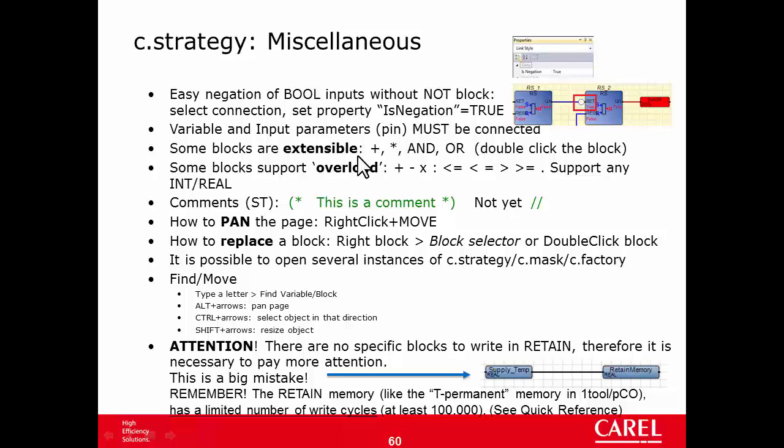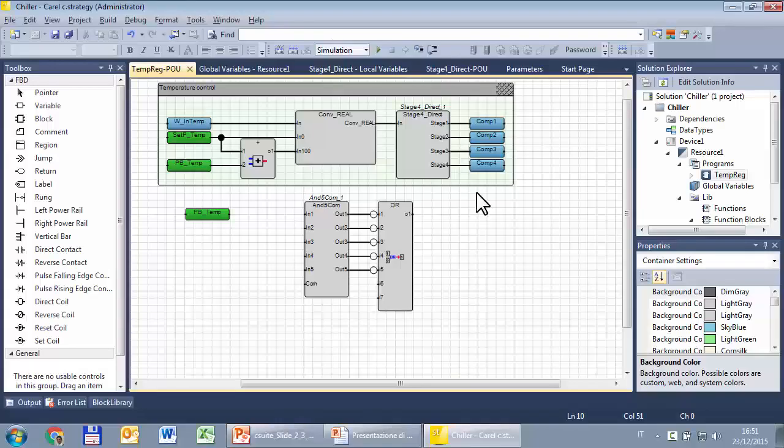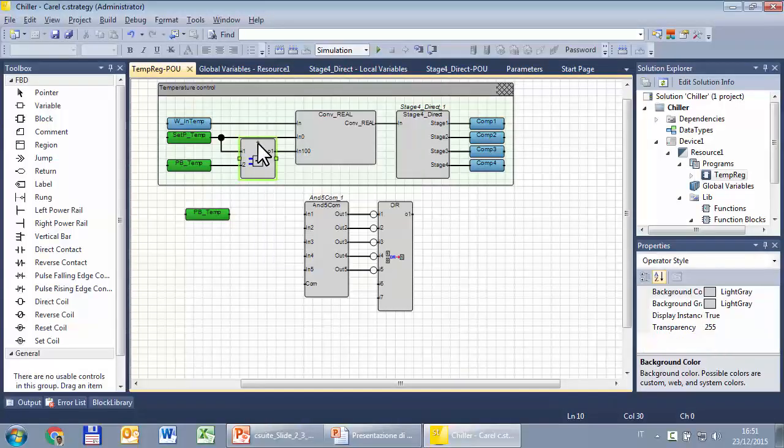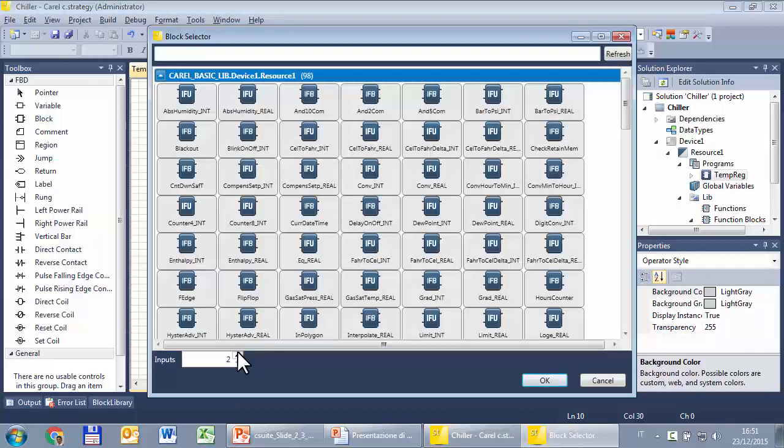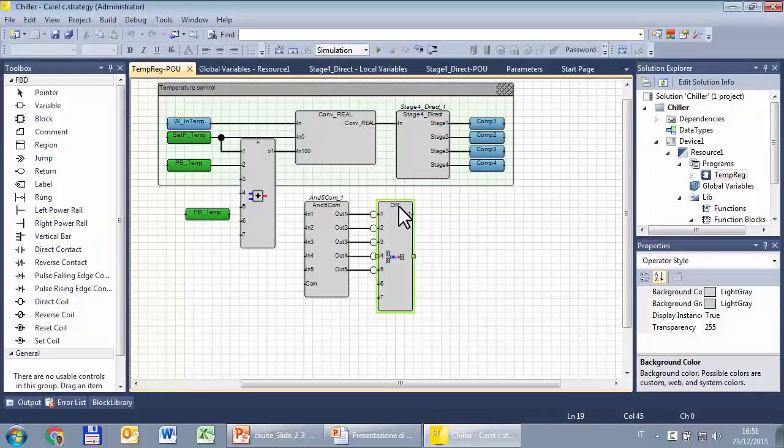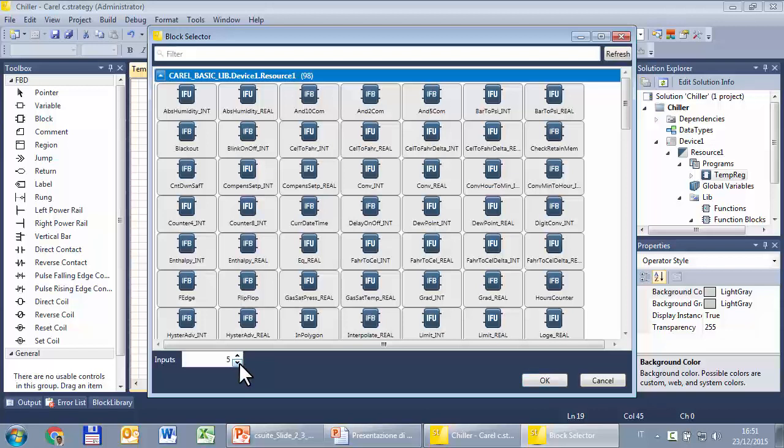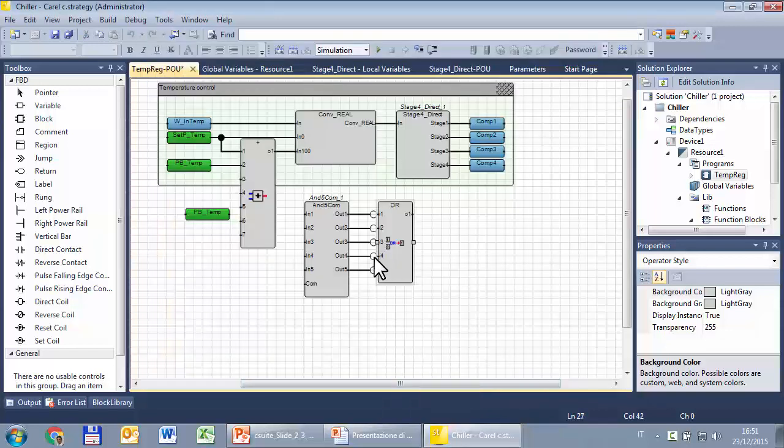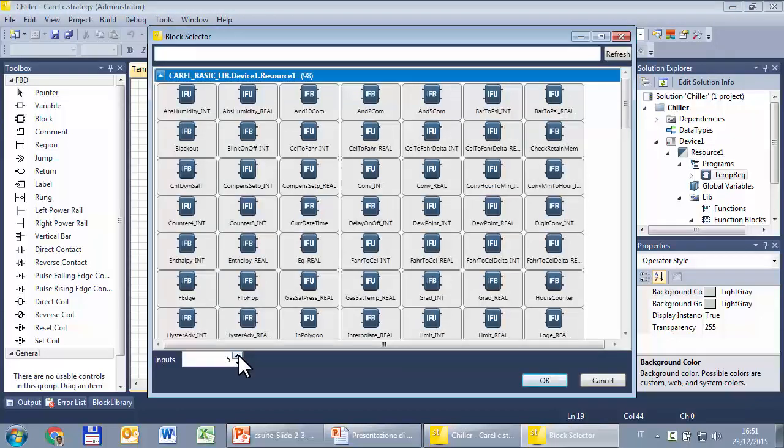Next point, some blocks are extensible. At the moment only the plus and the multiplication and OR support this feature. So it states that it is possible to double click the block, select the number of inputs and then OK. It works also with the OR, double click. There aren't specific blocks for OR with 2, 3, 4, 5, 6 and so on inputs. Just double click and select the number of inputs.